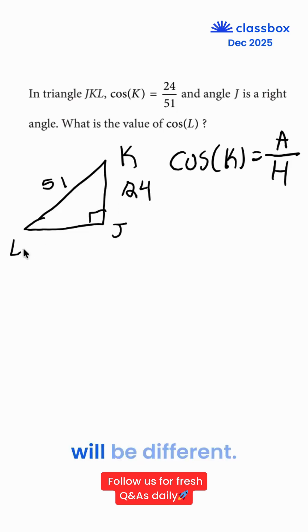Cosine of L would be different. Cosine of L would be our adjacent over here times our hypotenuse over here. What's our adjacent over here?